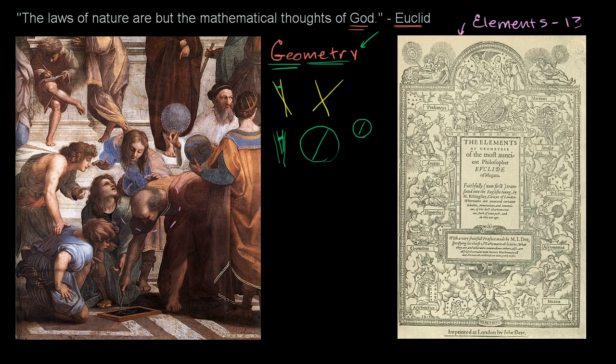And this right over here is the frontispiece for the English version of, or the first translation of the English version of Euclid's Elements. And this was done in 1570. But it was obviously first written in Greek, and then during much of the Middle Ages that knowledge was shepherded by the Arabs, and it was translated into Arabic. And then eventually in the late Middle Ages translated back, translated into Latin, and then obviously eventually English.